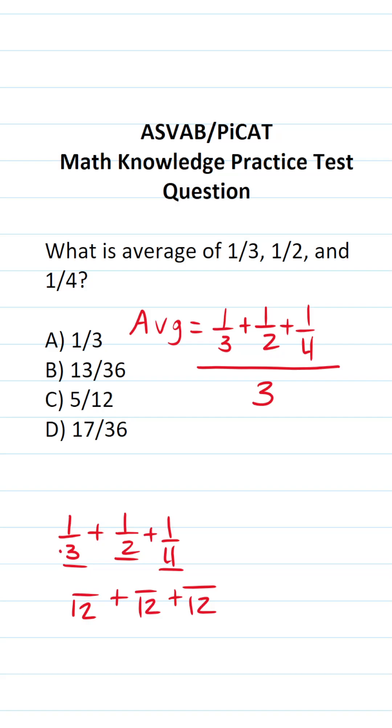To make three twelve we would have to multiply it by four. We're also going to do that to its numerator. Again, three times four is twelve. Four times one is four.